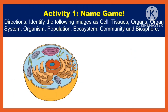The first activity is called the Name Game. All you have to do is identify the following images as cell, tissue, organ, organ system, organism, population, ecosystem, community, and biosphere.